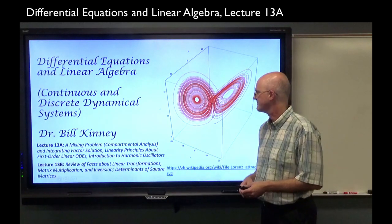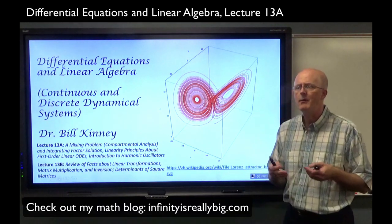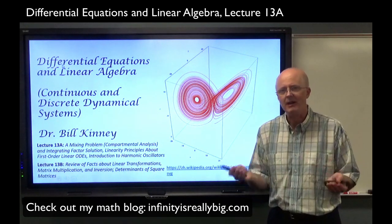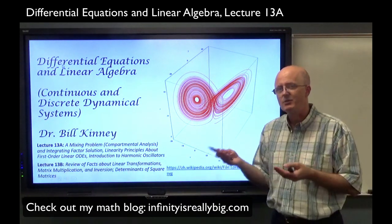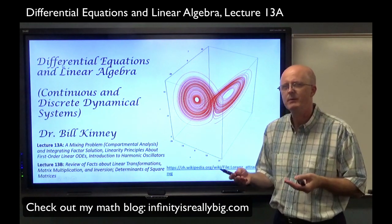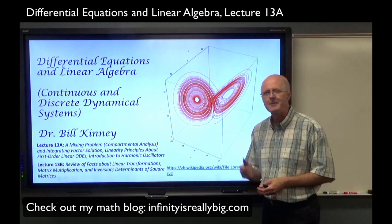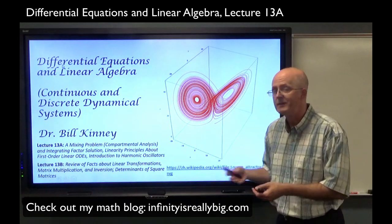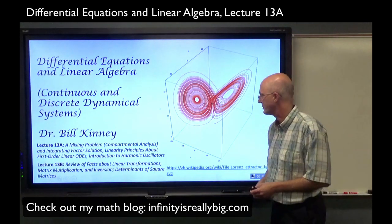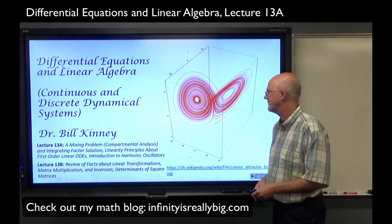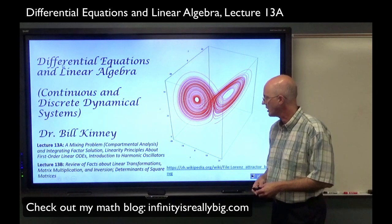Then we'll do some theory — linearity principles about first order linear ODEs — some theorems that we will actually prove. We won't do a ton of proofs in this class; our lack of doing proofs is the main thing that makes this a four-credit course as opposed to a six-credit course. Introduction to Harmonic Oscillators is going to be the last topic. Lectures 13a and 13b are going to be connected, really starting to see connections between differential equations and linear algebra. In 13b we'll review linear transformations, matrix multiplication and inversion, and introduce the idea of a determinant of a square matrix.